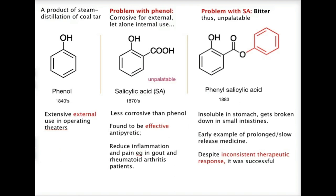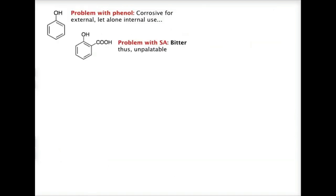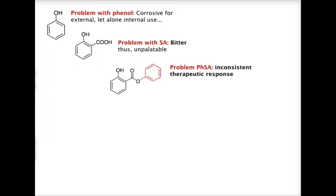To summarize the discovery of aspirin: you start off with phenol, but the problem is it's too corrosive. You then add on a carboxyl acid adjacent to the OH group to get salicylic acid. It's bitter and unpalatable. So you modify — changing the OH group into a phenol ester. It works, but the therapeutic response is inconsistent.